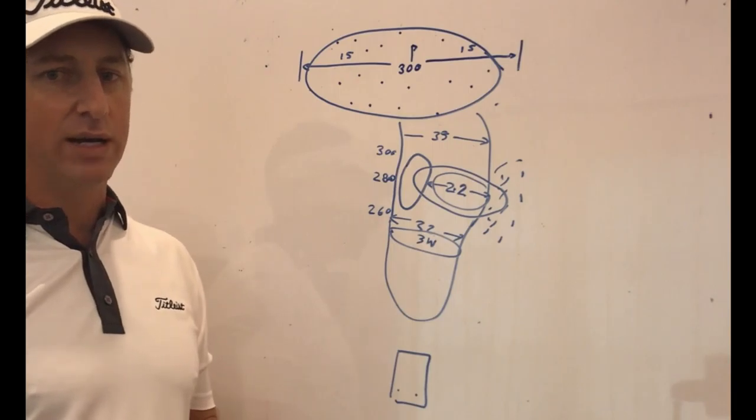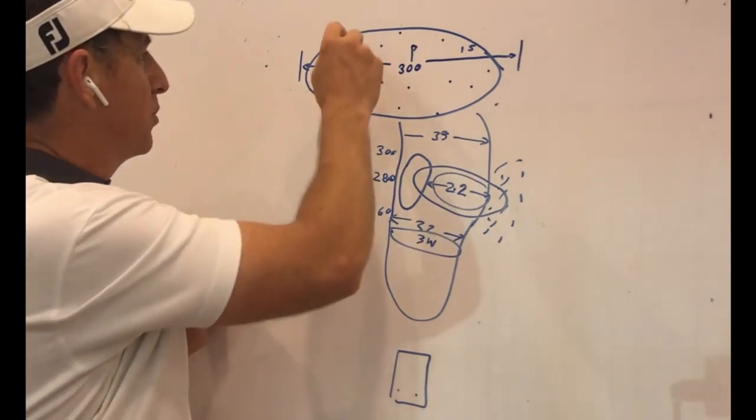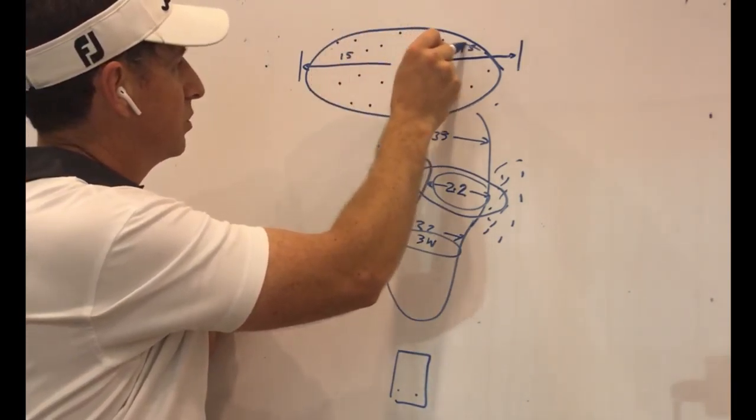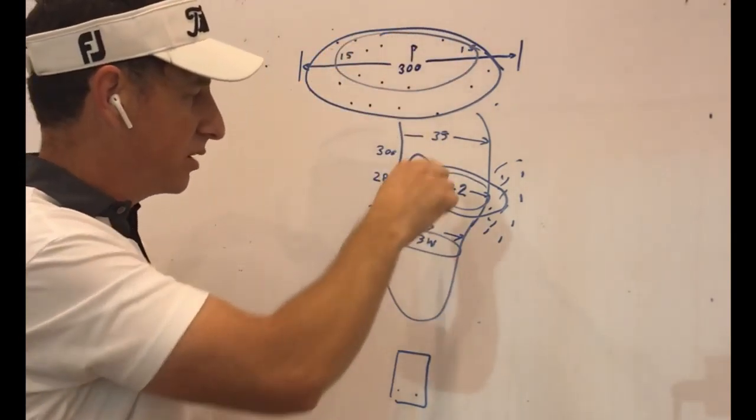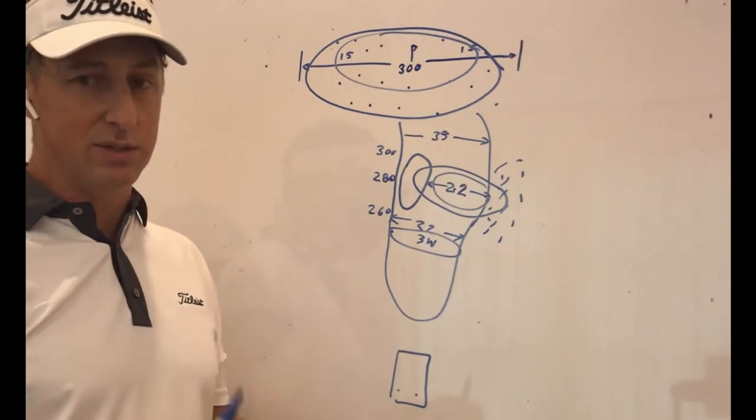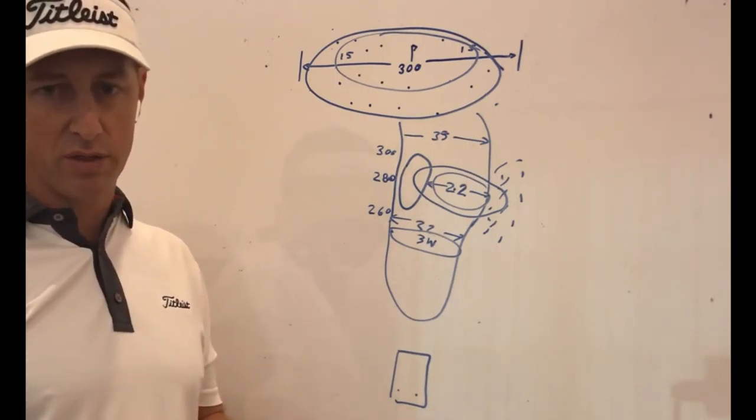It's a 270, it's a 280 versus a 290 to a 300, but your dispersion starts to get a little tighter. So when you're in certain situations where you've got narrow drives or drives that don't tend to suit your eye so much, then you go with that.